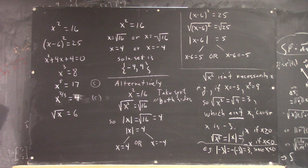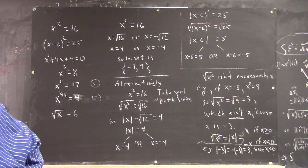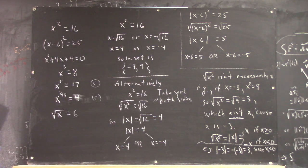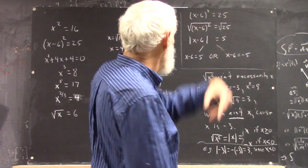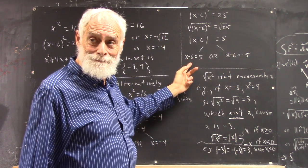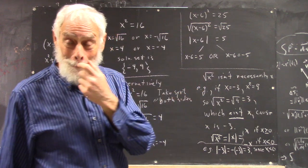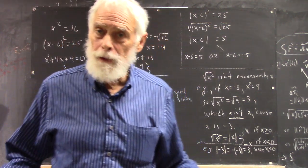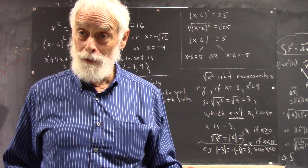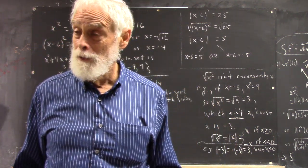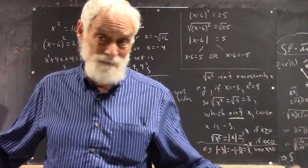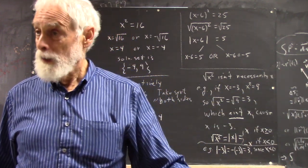I graded about 30 assessment tests last night from various sections of pre-calculus, and almost all of them had a place where you had an absolute value equal to something. Almost everybody just removed the absolute value sign — and that didn't get a very high score. This indicates that most of our pre-calculus classes don't do a good job of teaching absolute values, which goes back to the fact that most algebra classes don't do a good job of teaching absolute values.